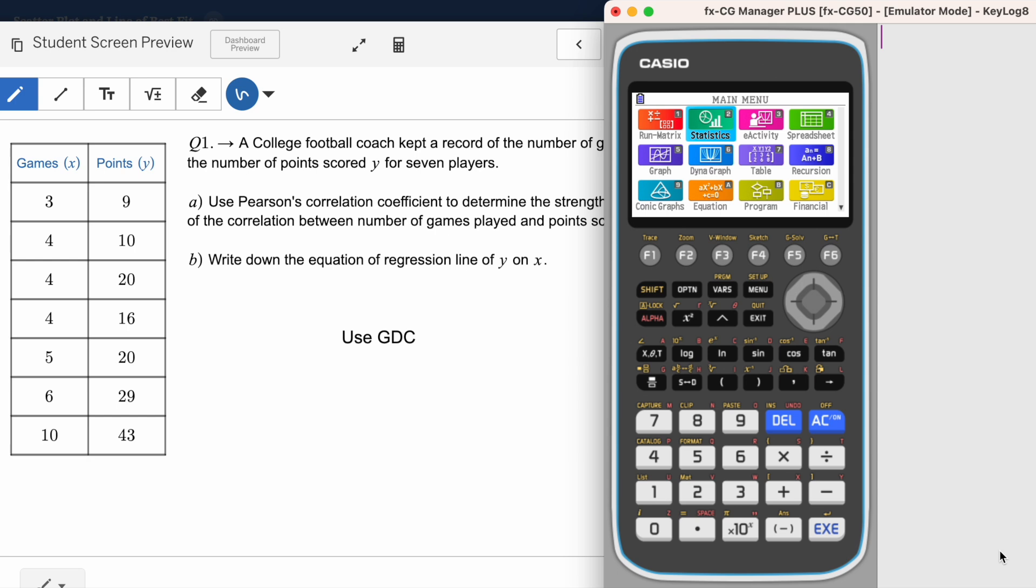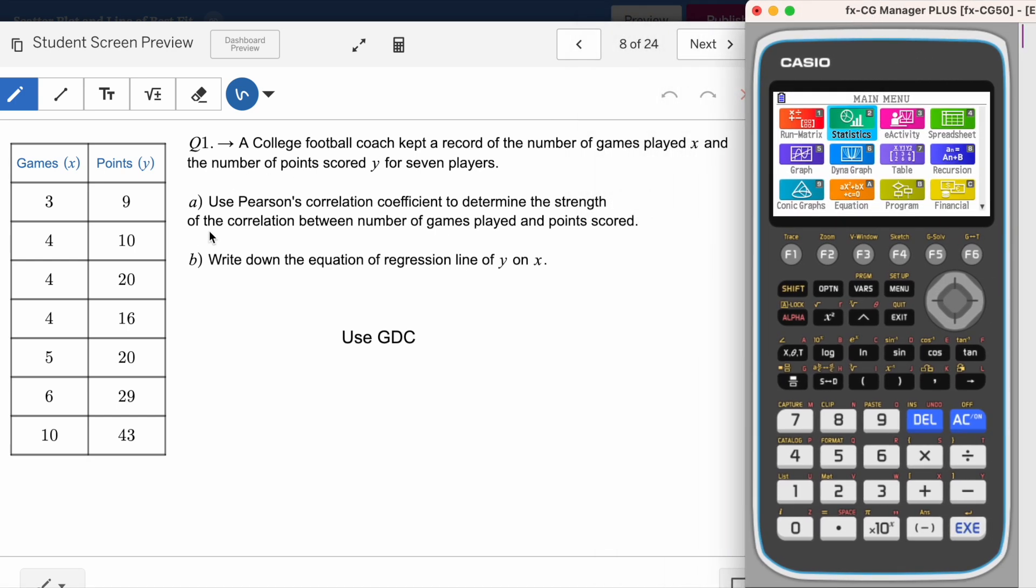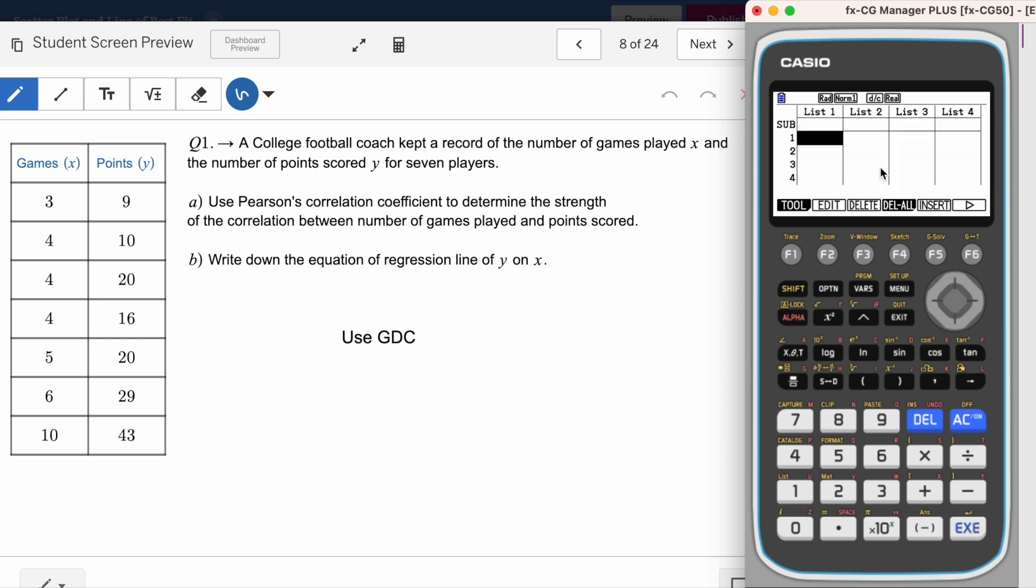If you see on my screen, I have a question which is asking to find the Pearson's coefficient and write down the equation of regression of y on x. In order to start this question, you can see there are games and points values given. We'll go to our Casio calculator and follow this menu button, and you will find there is a statistics option. Just select that and enter these numbers.